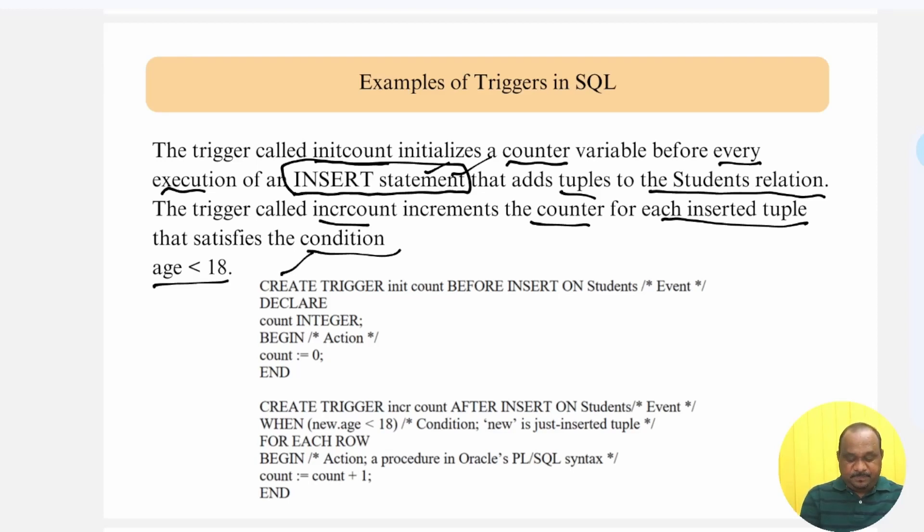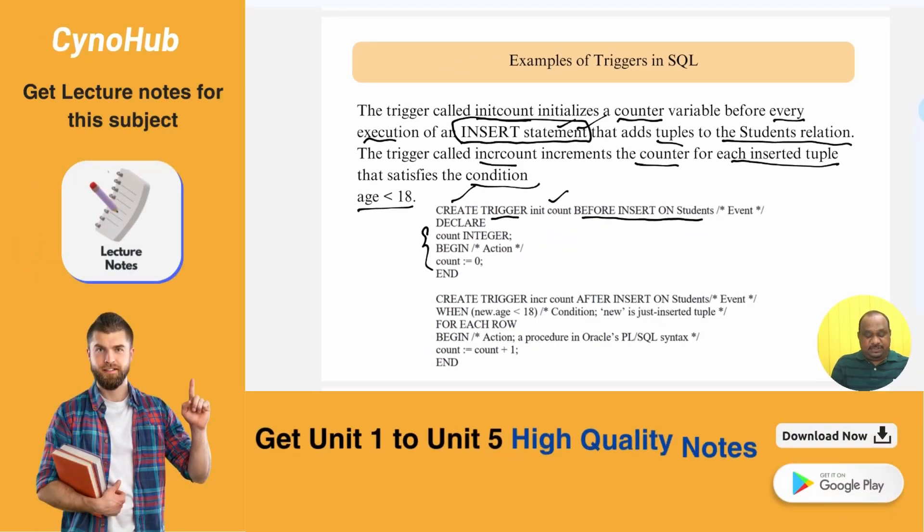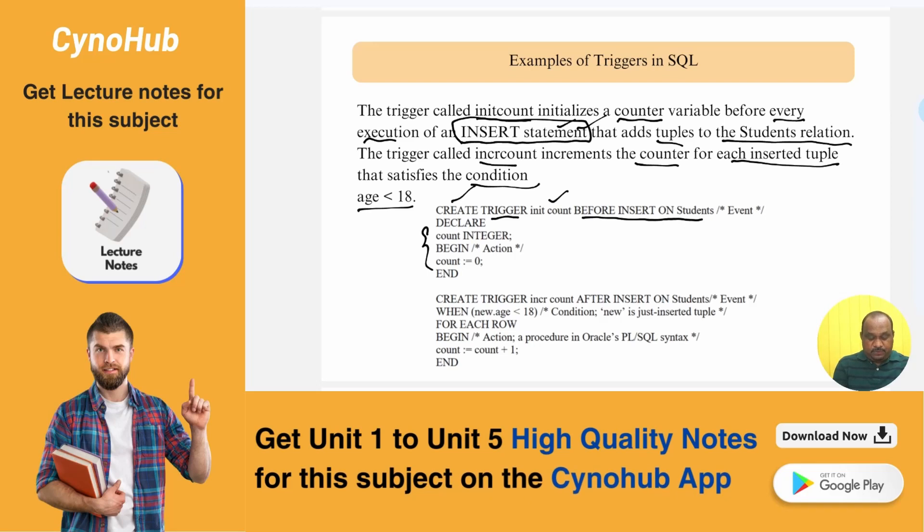Trigger name, initialization, before inserting the row or tuple to the student record. Declare the counter. This shows the actual trigger procedure. Count is integer, begin, initially count is zero, then end.